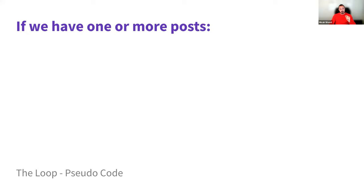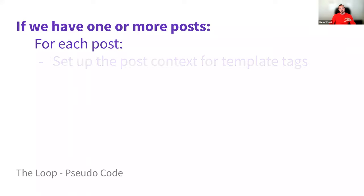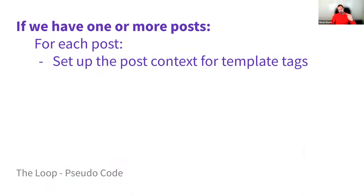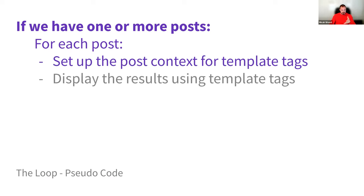I'm going to walk through a little pseudocode to demonstrate what we're talking about. First, if we have one or more posts, then for each post we'll set up the post context for template tags. This is the main concept for the loop. The theme, once it has that context set up, would use whatever template tags it's going to use — the content, the title, or various other template tags available in WordPress to display that. That part is not specifically part of the WordPress loop, but it is obviously a key part since it's the actual rendering of stuff for people to see.